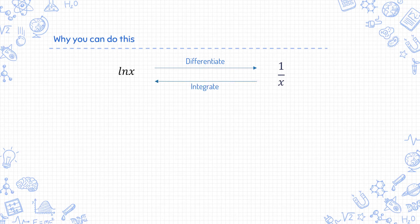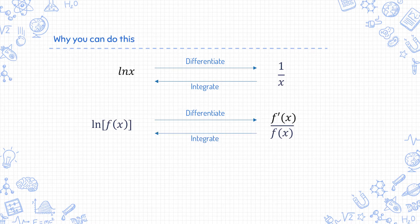you get ln x. So if you replace the x with fx, to differentiate ln of fx, using chain rule, the outer layer, first you get 1 over fx, then the inner layer, you multiply by f'x. Therefore, conversely, if you integrate f'x over fx, you get ln of fx.